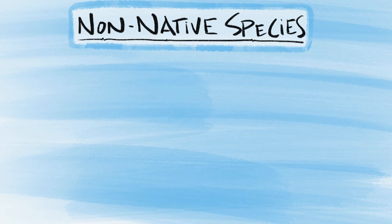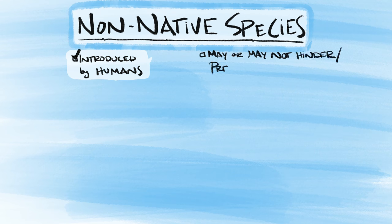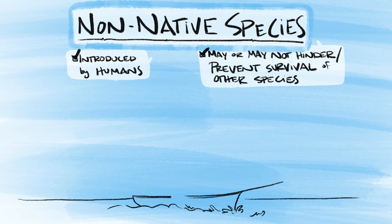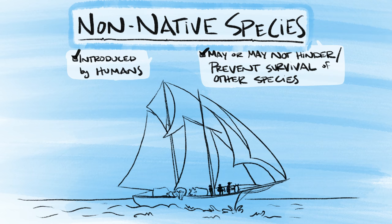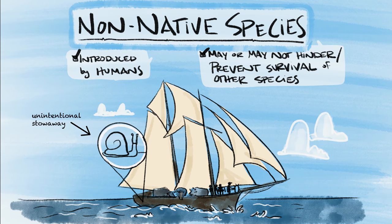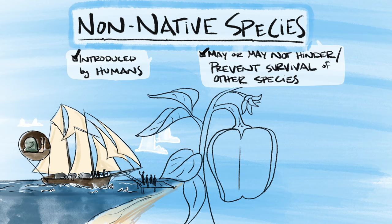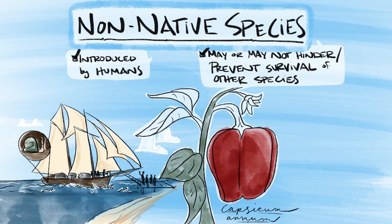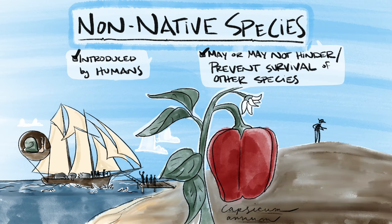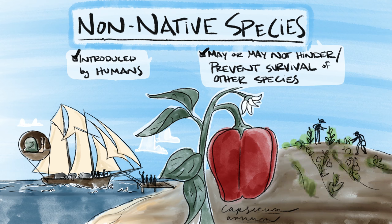Non-native species. These are species that do not occur naturally in an area, but are introduced as a result of a deliberate or accidental human activity. Most importantly, they exist where they have not naturally occurred and may even be considered beneficial under certain circumstances. One example you may recognize is the bell pepper. It's not native to the United States, but it currently presents no threat to native plants.